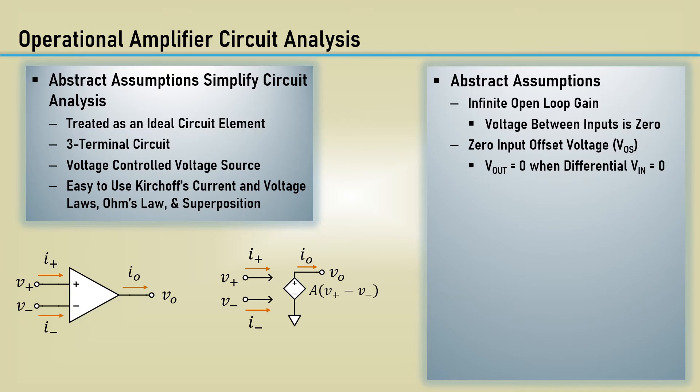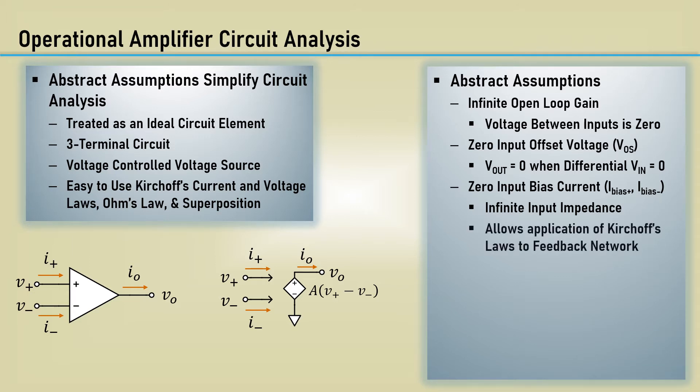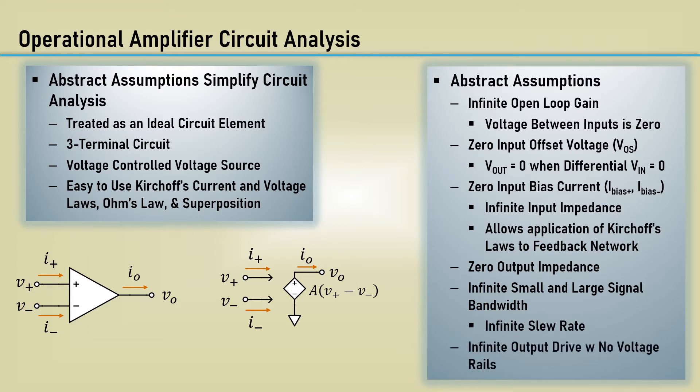The next assumption is zero bias current. This means the input of the op-amp draws zero current when a voltage is applied to either input, and therefore, the input impedance is assumed to be infinite. This is what allows us to use the simple application of the various circuit analysis laws and theorems to analyze the feedback networks. It is assumed that the output impedance is zero. Although the op-amp's output impedance is not zero, the loop drives the output to a level that would be consistent with zero ohms. For the abstraction, the op-amp has infinite, small, and large signal bandwidth, and therefore, infinite slew rate. The last assumption is that the op-amp has infinite drive with no voltage rails. That's a definite limitation, but knowing the input level and gain, it can be known how close to clipping the output is.